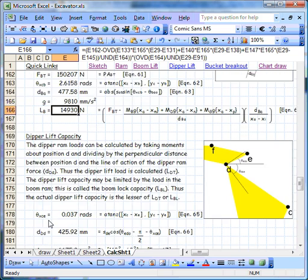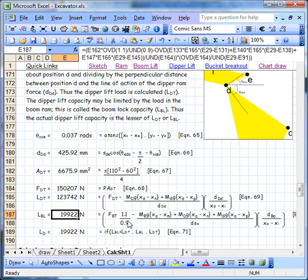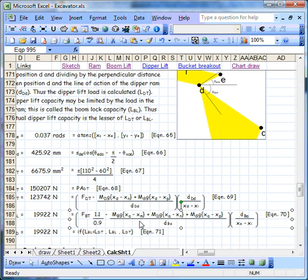We can do the same thing for dipper lift capacity for any geometrical configuration. Although some of the formulas here can get quite long, we use the XLC add-in so that we can easily read the equations and easily check them too.